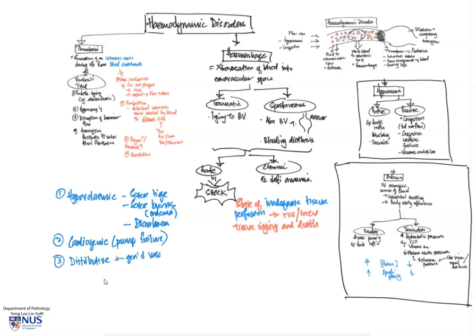And there is also distributive shock. This one is actually a little bit different. It is due to generalized vasodilation. And what can cause this? Things like septic shock from a bacterial infection, neurogenic shock, as well as anaphylactic shock.